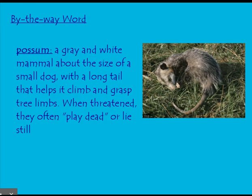While we're reading today, a by-the-way word: possum. That's a gray and white mammal, meaning it gives birth to live babies. It has fur and it's about the size of a small dog with a long tail that helps it climb and grasp tree limbs. When threatened, they often play dead or lie still. So if you ever came across a possum, it may be running away and then all of a sudden just fall over and you think it's dead, but it's actually not. That's how they escape their predators. And they really creep me out, so that is a fun picture to have to stare at.